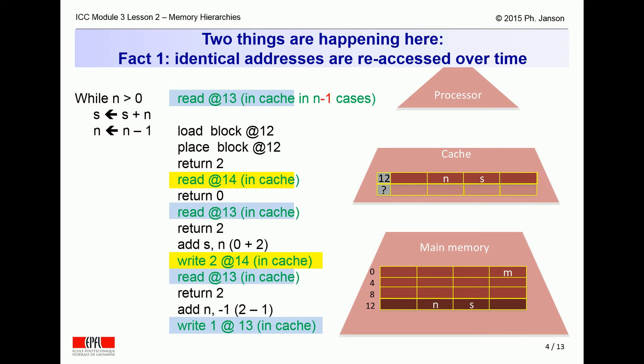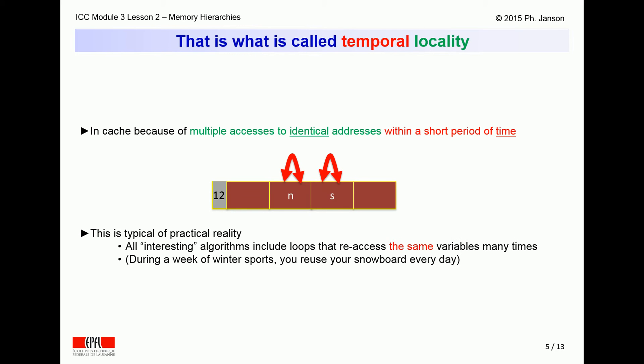This is due to two manifestations of what is called locality of reference. The first of these manifestations is that the program accesses over and over again the same variables at the same addresses over time, mostly because of many iterations around its loop, as seen here with repeated accesses to the variable n at address 14. This is what is called temporal locality.